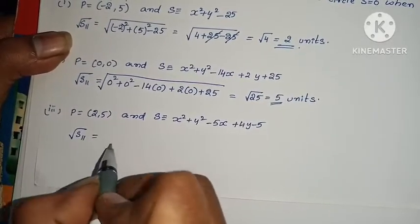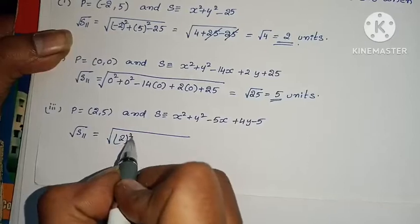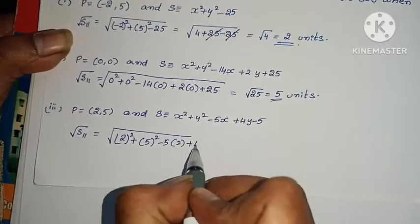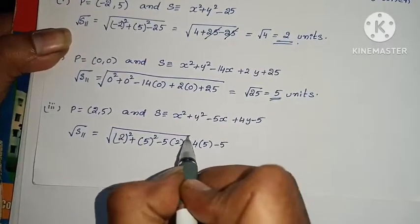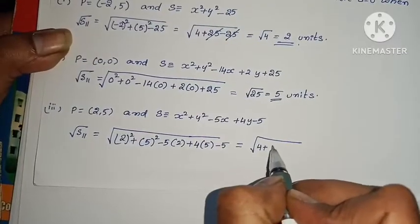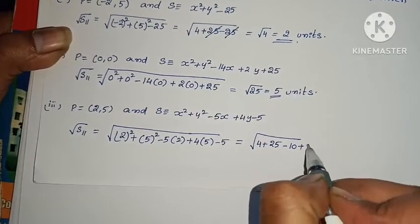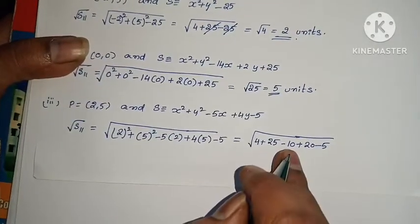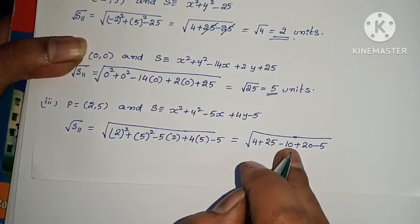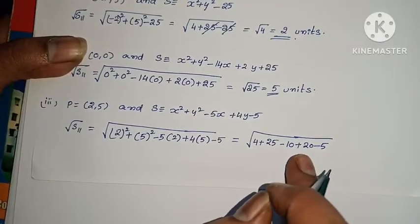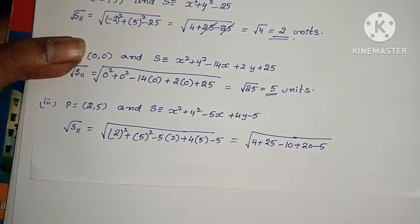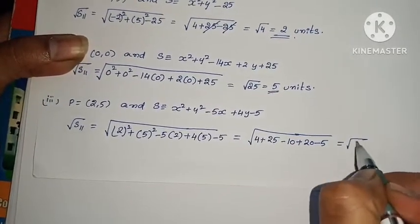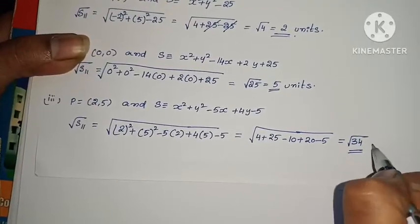Next: root S11 = x1 squared plus 2 squared plus 5 squared minus 5 into 2 plus 4 into 5 minus 5. Calculating: 4 plus 25 minus 10 plus 20 minus 5 = 34. So length of tangent = root 34 units.